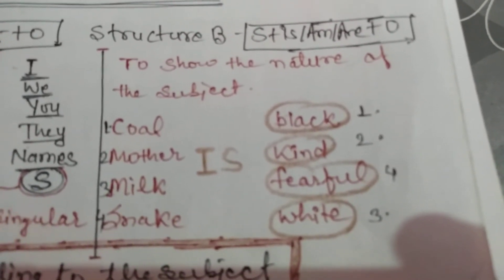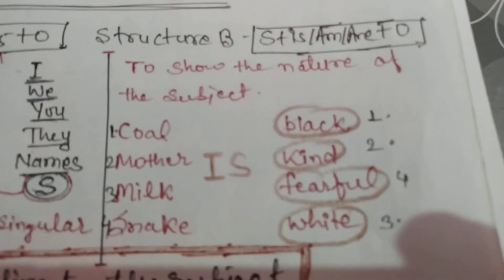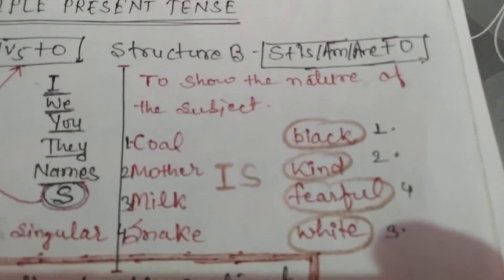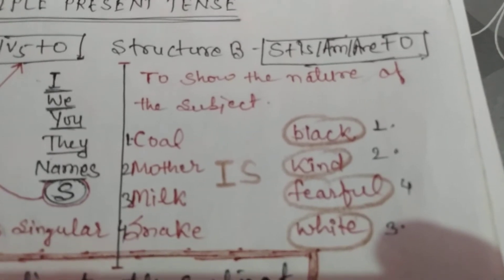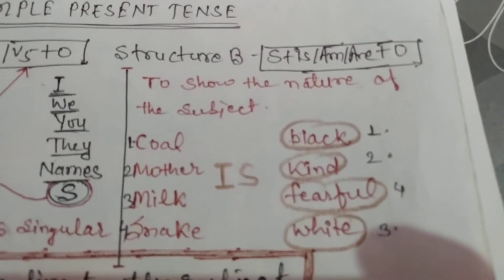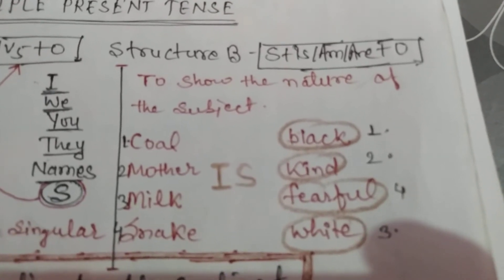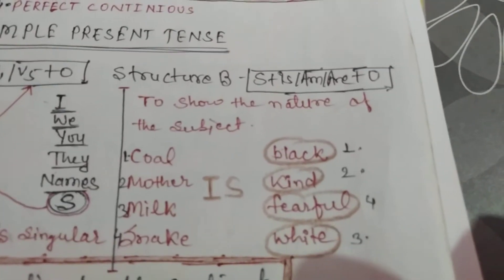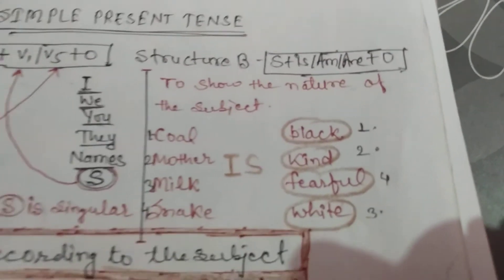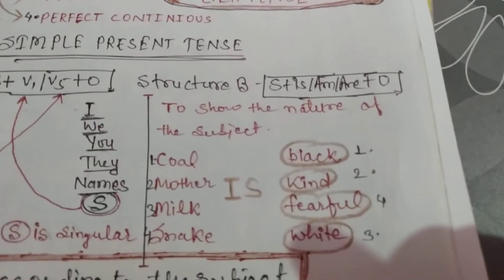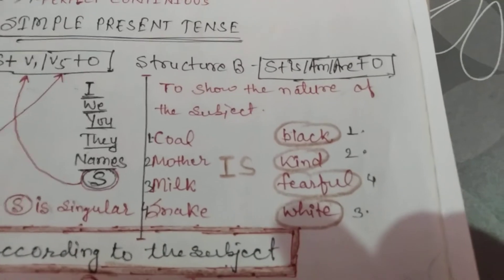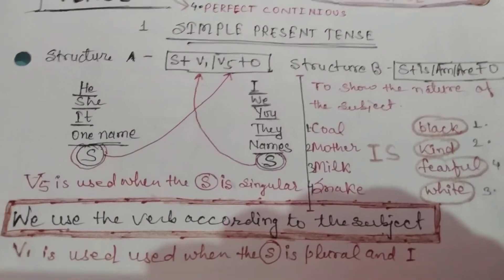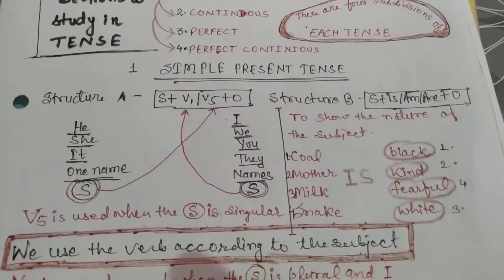Coal is black — this is the nature of coal. Mother is kind — this is the nature of mother. Milk is white — this is the nature of milk. Snake is fearful — when you see a snake you get afraid. So these are examples of the nature of a subject using the structure Subject + is/am/are.